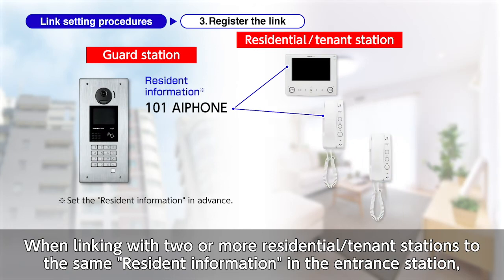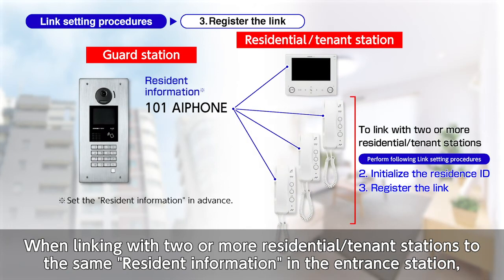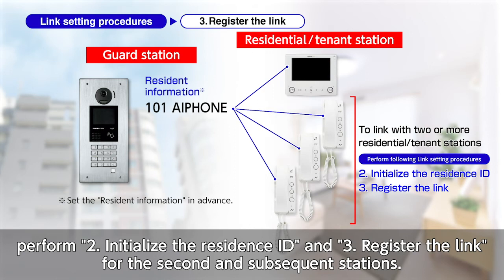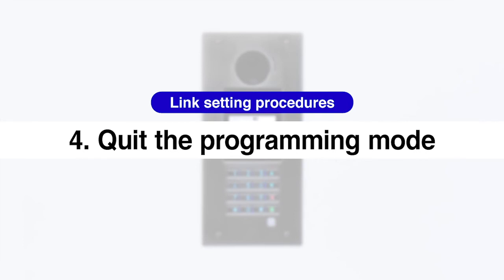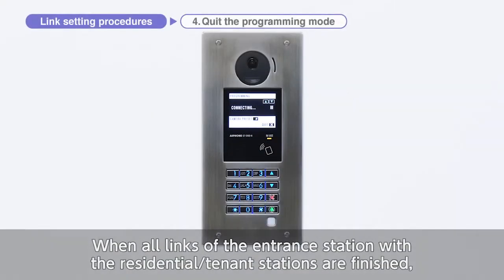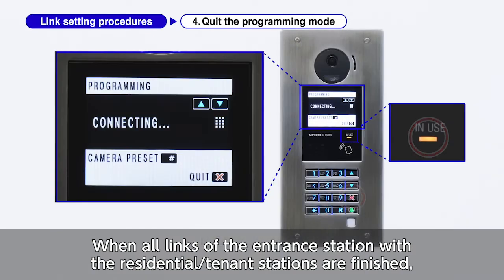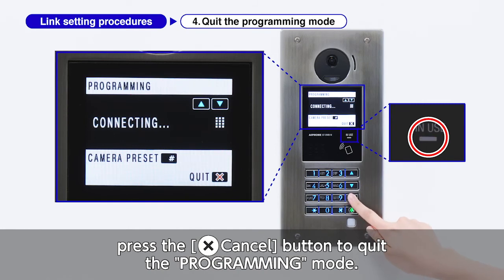When linking two or more residential tenant stations to the same resident information in the entrance station, perform step two (initialize the residence ID) and step three (register the link) for the second and subsequent stations. Step four: to quit the programming mode, when all links between the entrance station and residential tenant stations are finished, press the cancel button to quit.